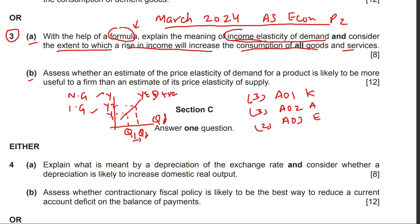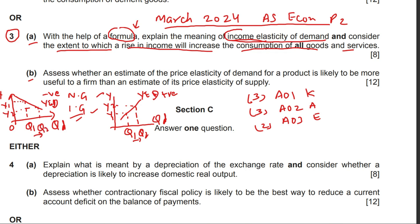Inferior goods are inversely related to the level of income. If income increases, demand for inferior goods falls because these are low-quality products — purchasing power rises and consumers buy less of them. Income elasticity of demand is negative for inferior goods. For example, if income was Y1 and quantity demanded was Q1, a fall in income to Y2 raises quantity demanded to Q2. This inverse relationship gives a negative income elasticity of demand.